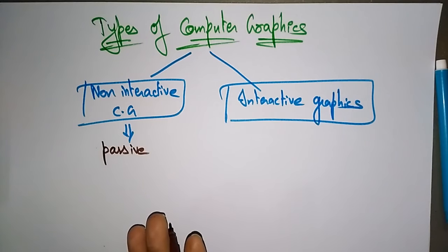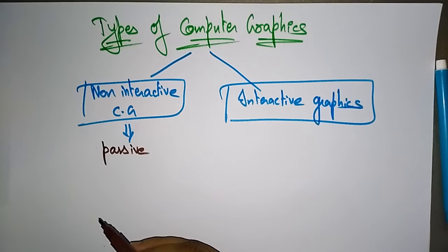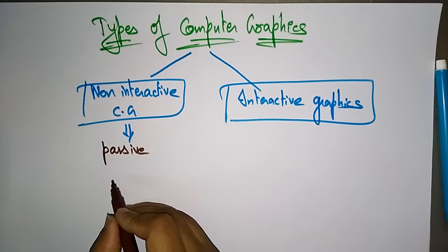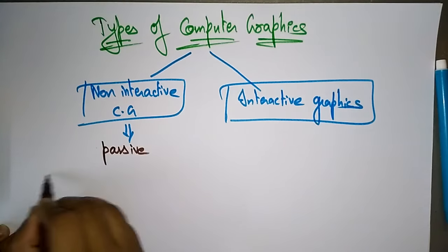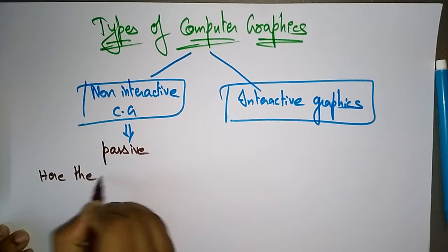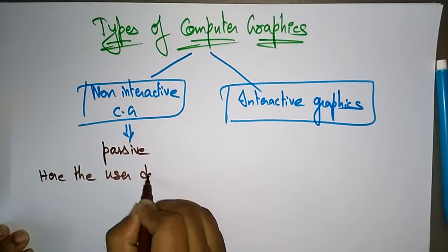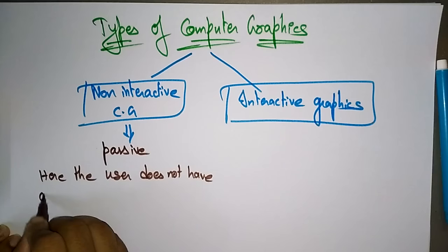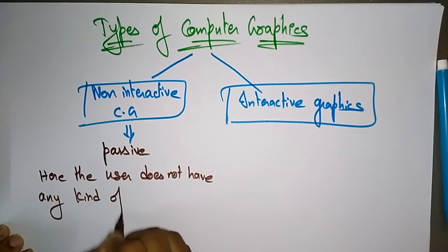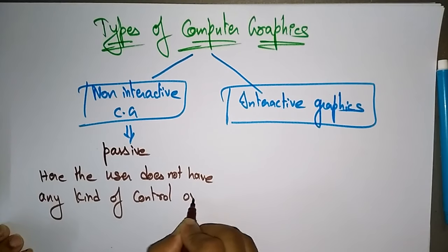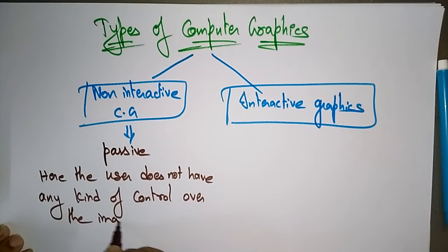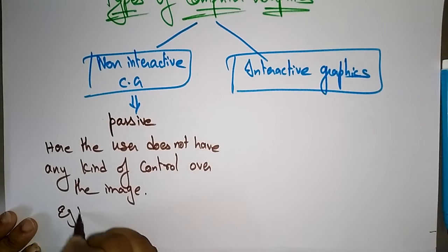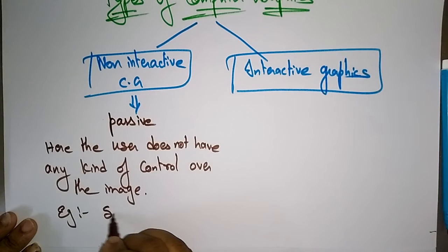If we are talking online, then it will be interactive. So non-interactive is passive — it is a type of computer graphics in which the user does not have any kind of control over the image. Whatever the image is, the user cannot control it. The example for non-interactive is a screen saver.